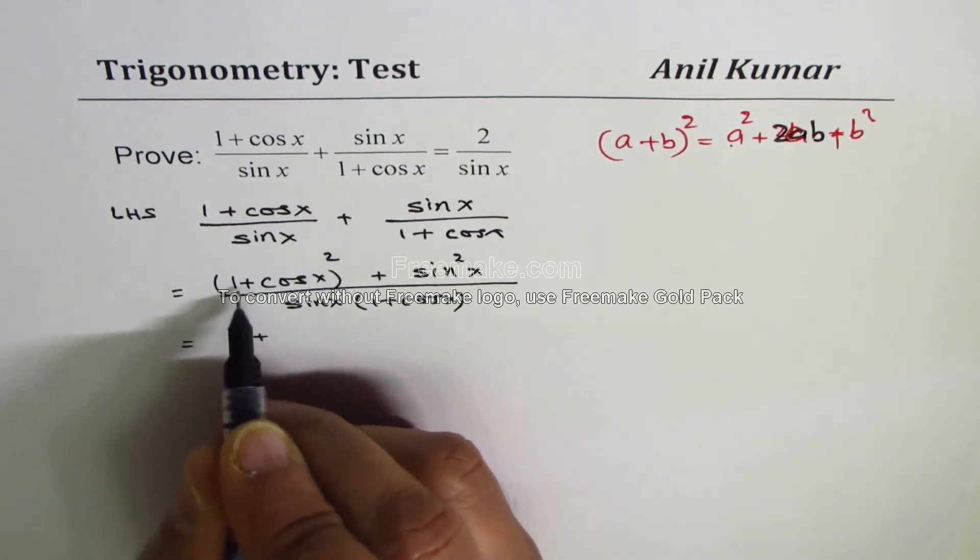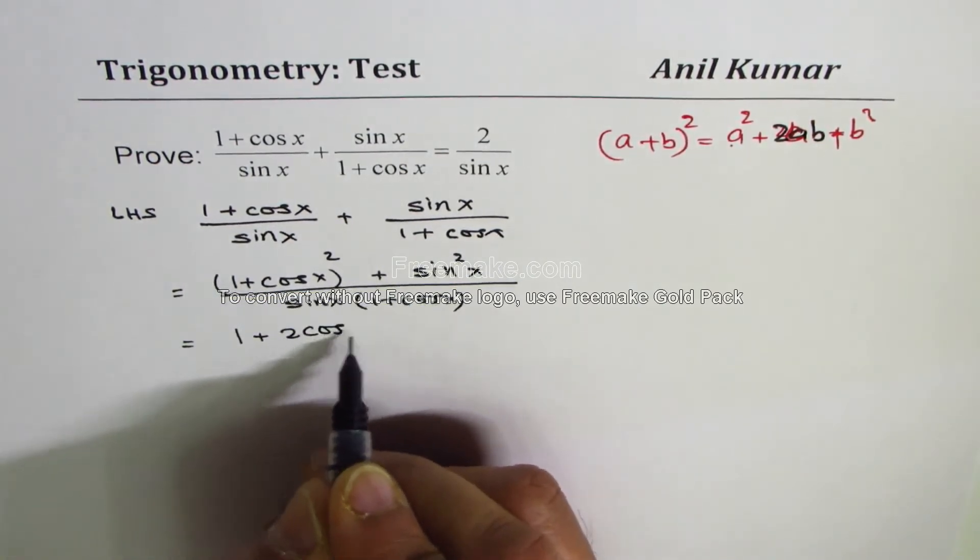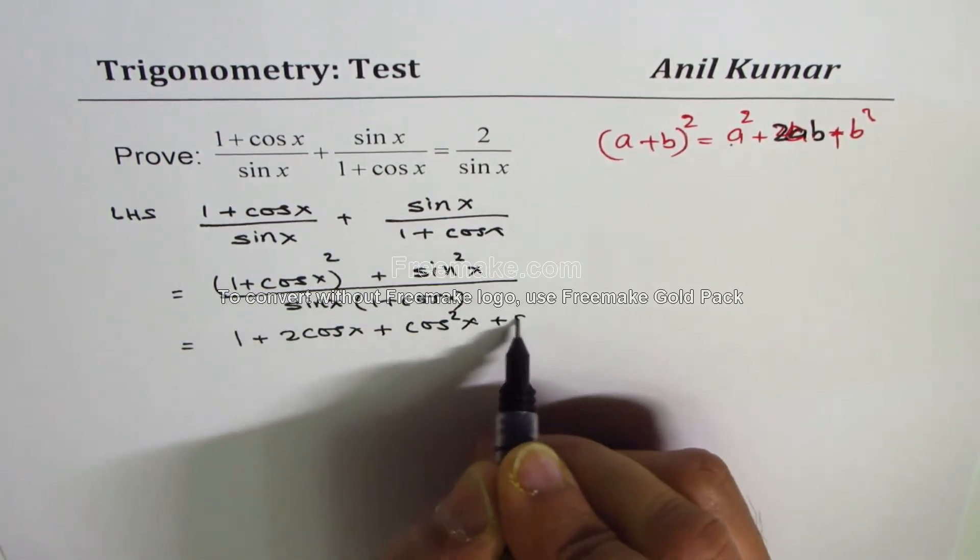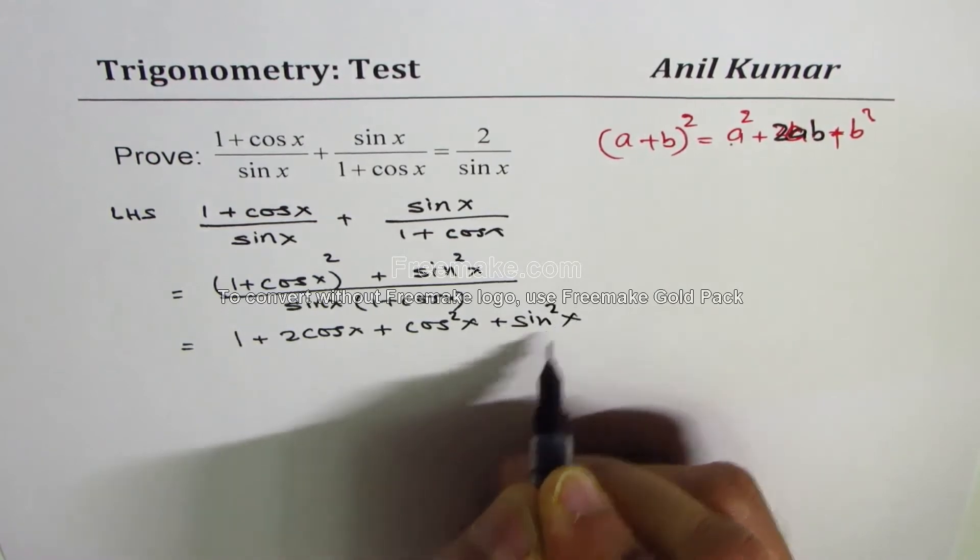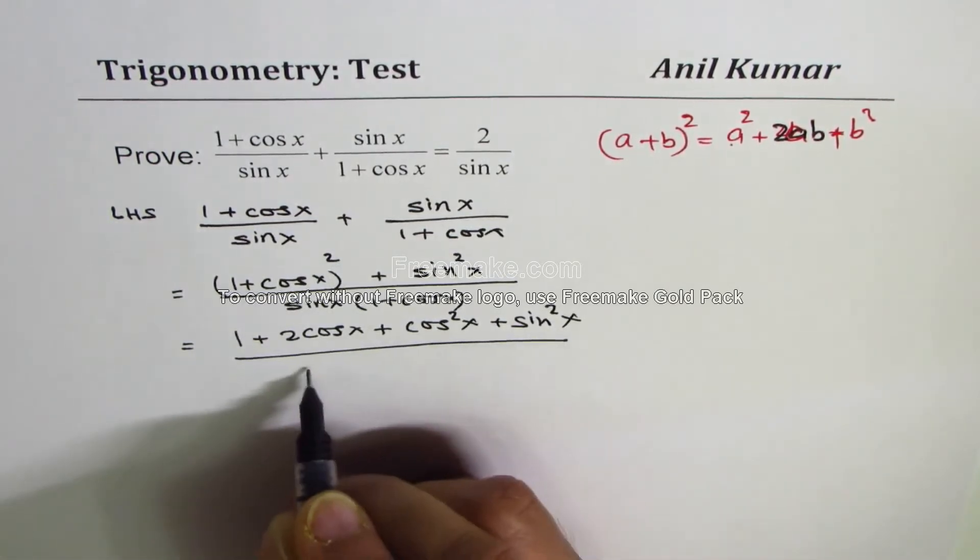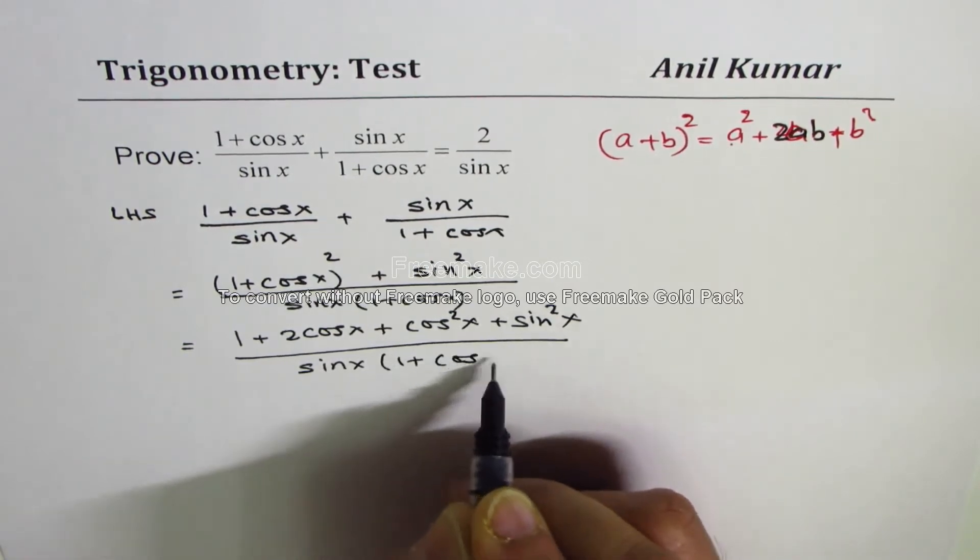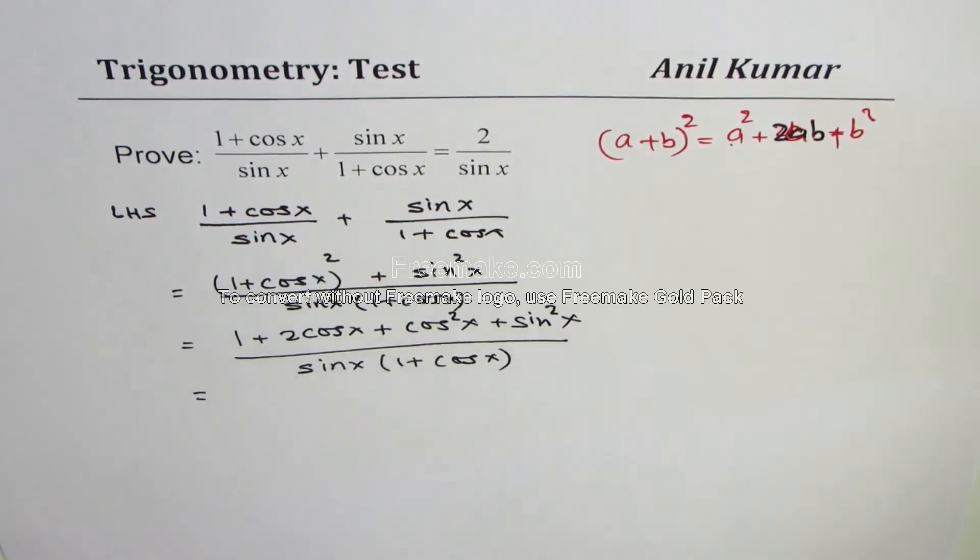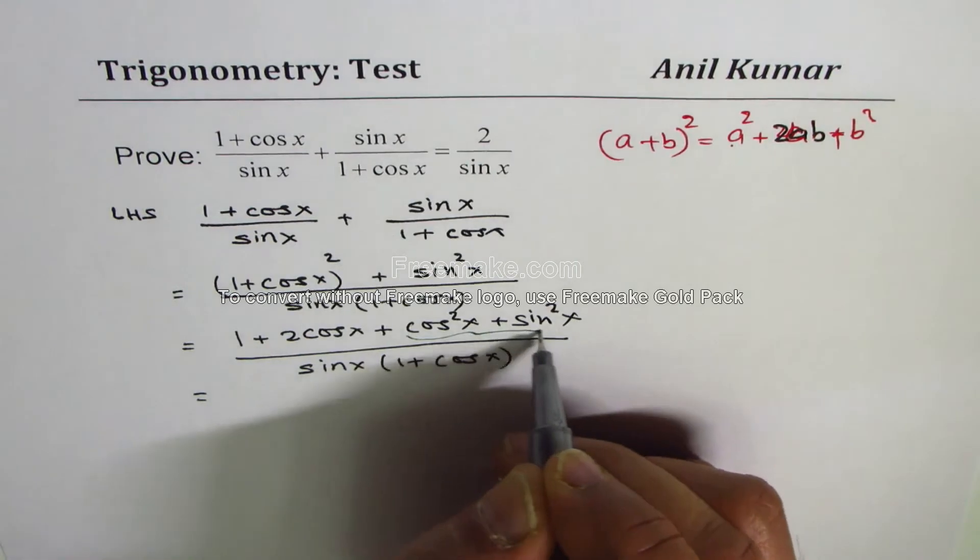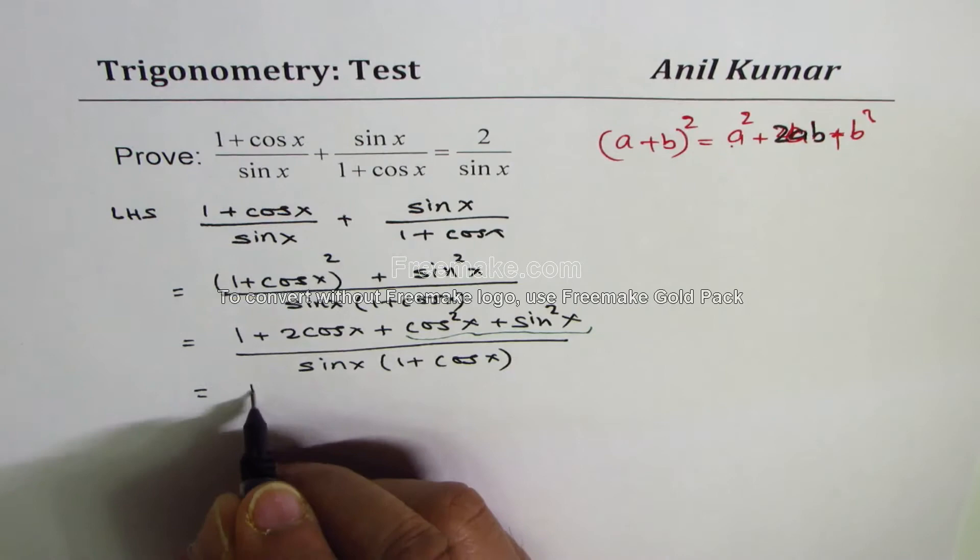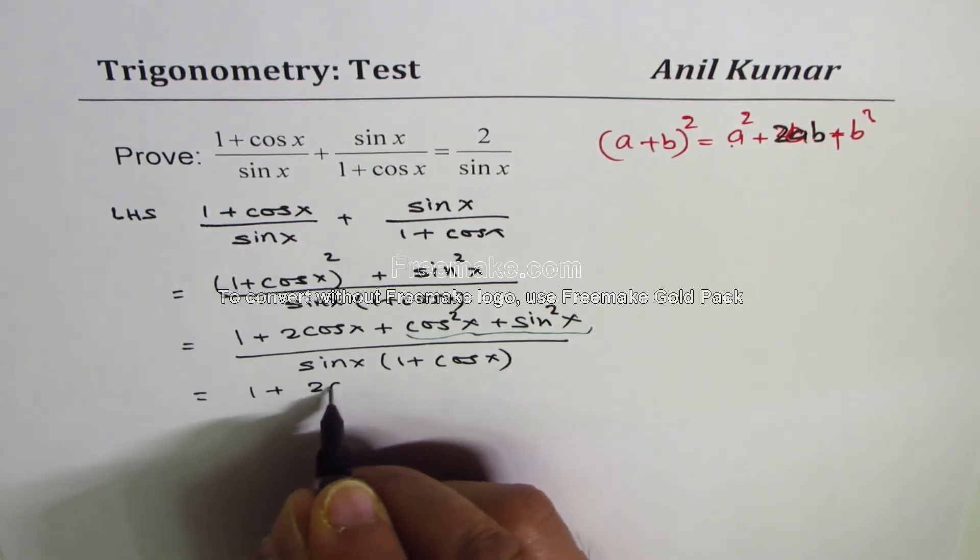So that means a squared is 1 plus twice this 2 cos x plus cos squared x plus sine squared x, divided by sin x times (1 + cos x). Now cos squared x plus sine squared x is 1.